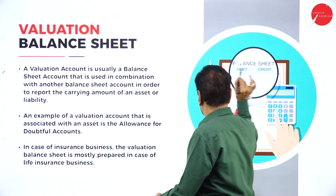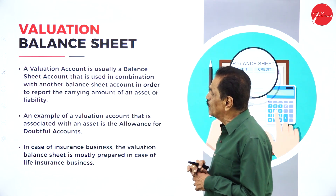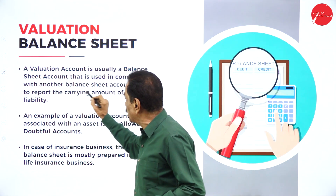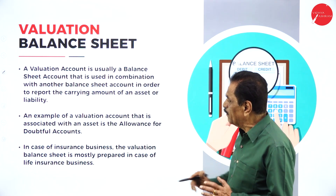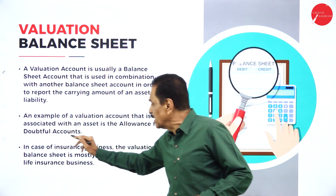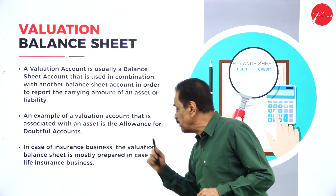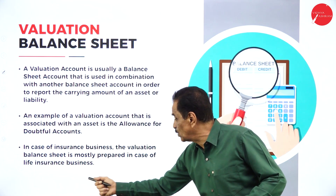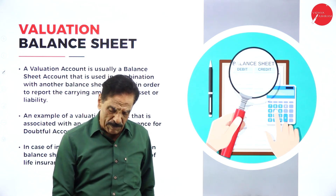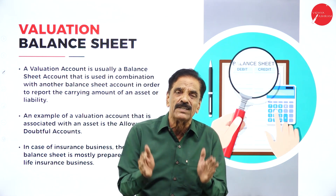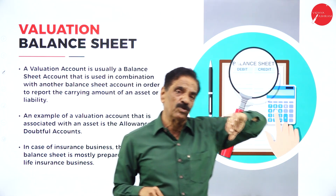Valuation of balance sheet: a valuation account is usually a balance sheet account used in combination with another balance sheet account to report the carrying amount of an asset or a liability. An example associated with an asset is the allowance for doubtful accounts. The valuation balance sheet is mostly prepared in case of life insurance. We have a life fund accumulated — whatever premium you are paying is accumulated and becomes the life fund of the insurance company.